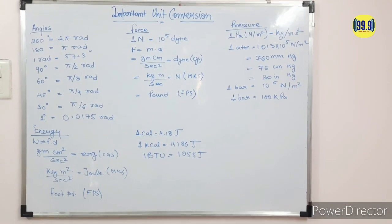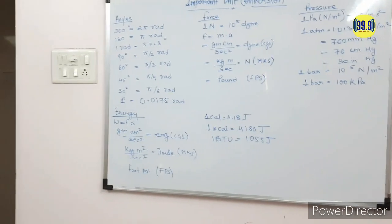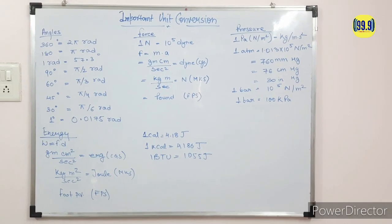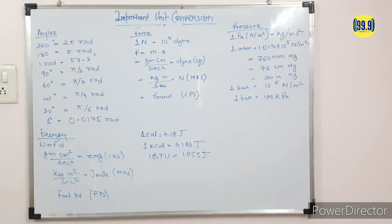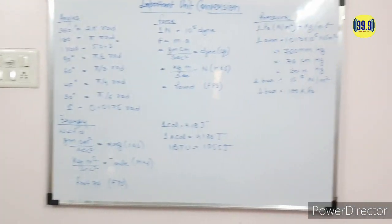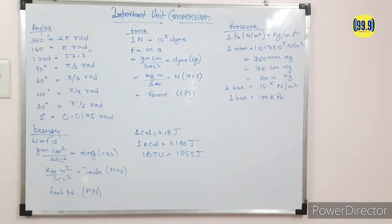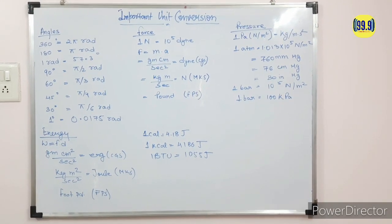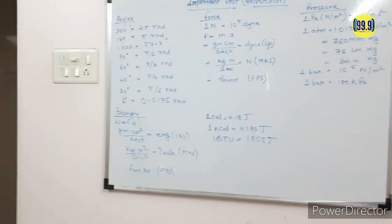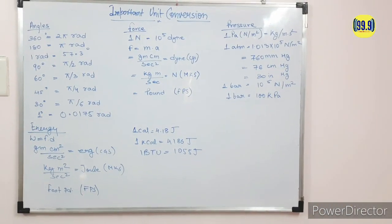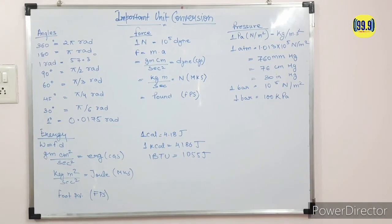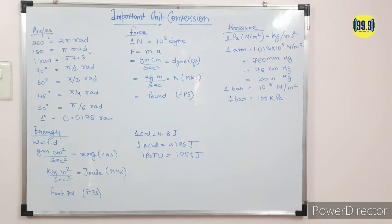Now come to energy. Energy is force into displacement. The CGS unit of energy is erg, which is gram·centimeter square per second square. The MKS unit is Joule, that is kg·meter square per second square. The FPS unit is foot-pound. 1 calorie is equal to 4.18 Joule, 1 kilocalorie is equal to 4186 Joule, and 1 BTU is equal to 1055 Joule.